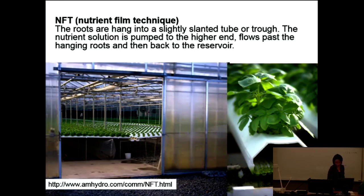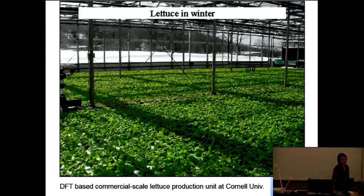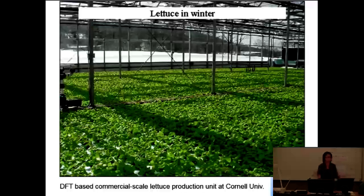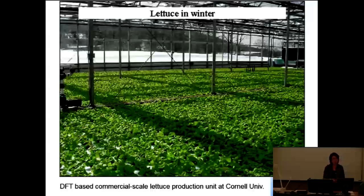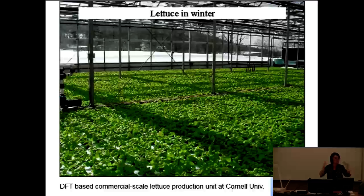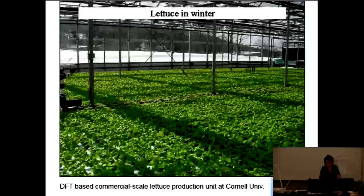Regarding whether to use segregated tanks or one large tank: separating into multiple tanks lowers risk because introducing a pathogen into one big tank could be a disaster. But managing many tanks and duplicating injection systems is a cost issue. In practice, most DFT lettuce production companies use either one or a very small number of ponds.